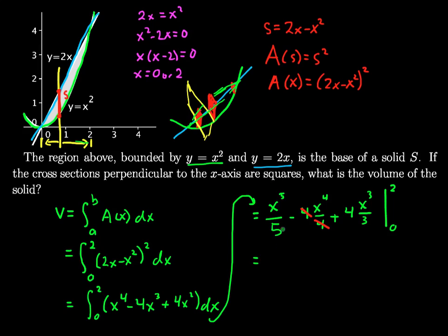And now we can just put in our 2 and our 0. So if I put in the 2, I get 2 to the 5th over 5, 32 fifths, minus 2 to the 4th, plus 4 times 2 cubed over 3. If I put in the 0, 0 to the 5th is 0, 0 to the 4th is 0, 0 to the 3rd is 0, it's just going to be a big old whopping 0, don't need to worry about that. Okay, so 2 to the 5th is 32, so 32 fifths, 2 to the 4th is 16, minus 16. 2 cubed is 8 times 4 gives me 32, so plus 32 thirds.